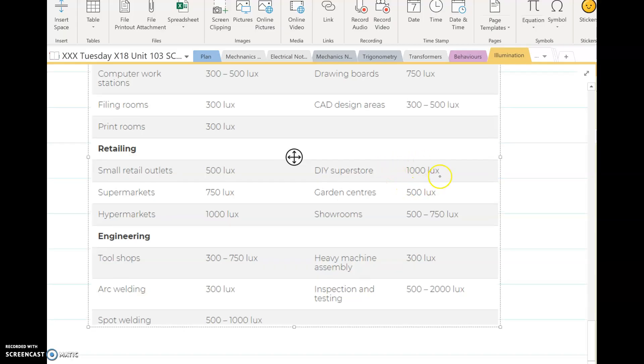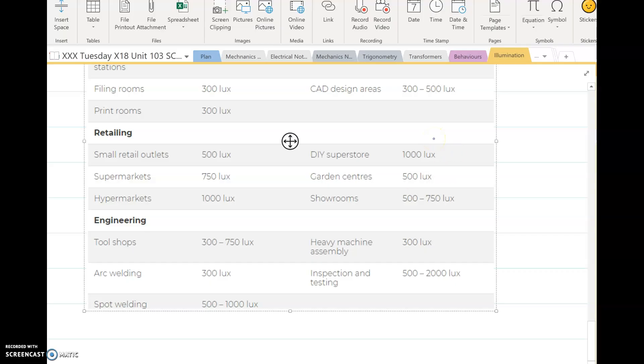Retailing though is very high, 1,000 lux for your superstores, hypermarkets, supermarkets. That's why when you walk into these places they're really bright, and the high bay lighting produces quite a lot of lumens. Your engineering workshops depends on the activity. If you are welding, 300 lux, right up to 2,000 lux. This depends very much on inspection and testing, so if you are building engines or assembling electronic circuits, you're going to need a very high level of lux for the detail. So this is a good guide to give you an idea on where to start and how many lights you would need.